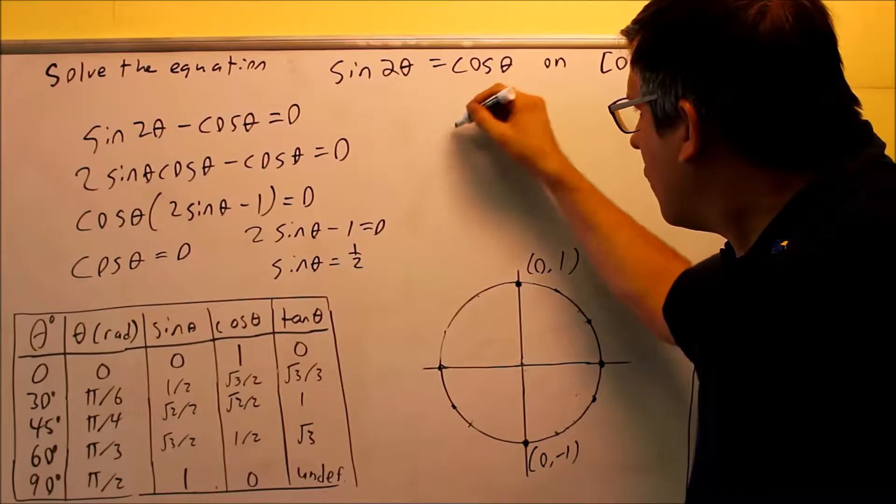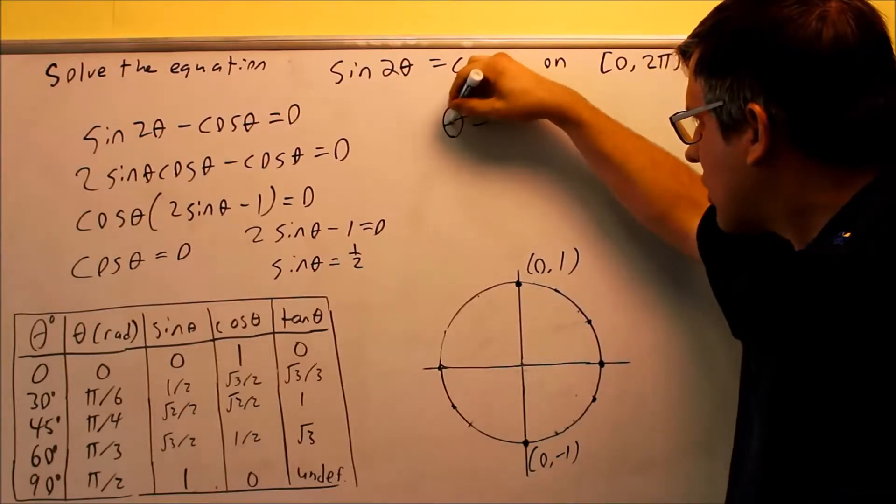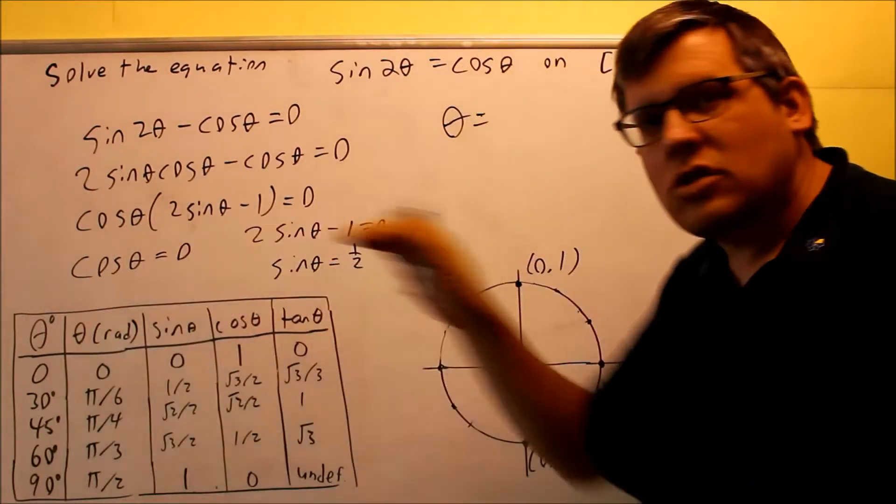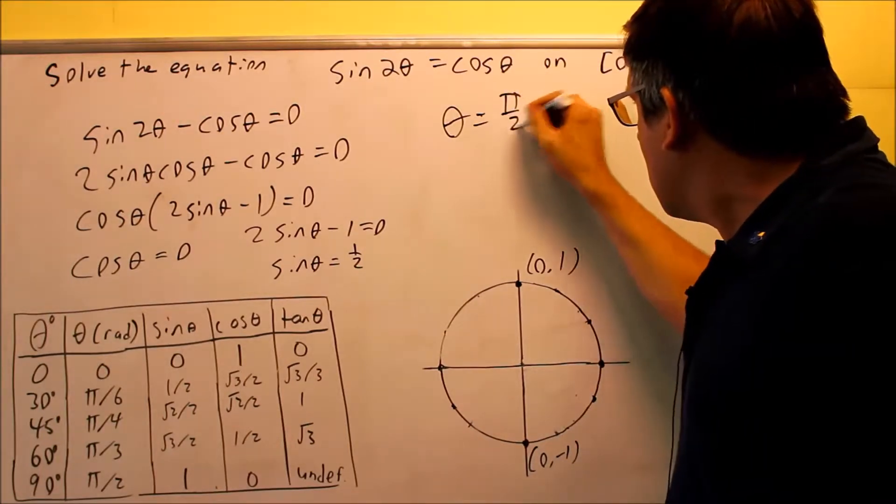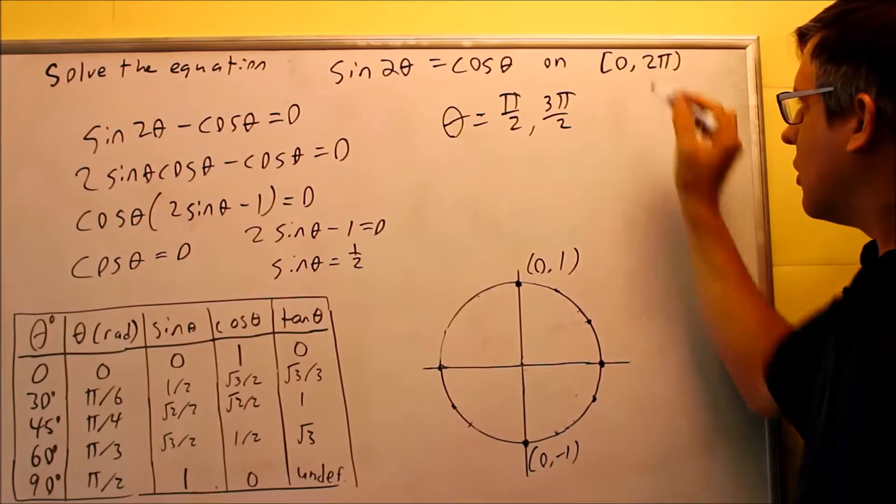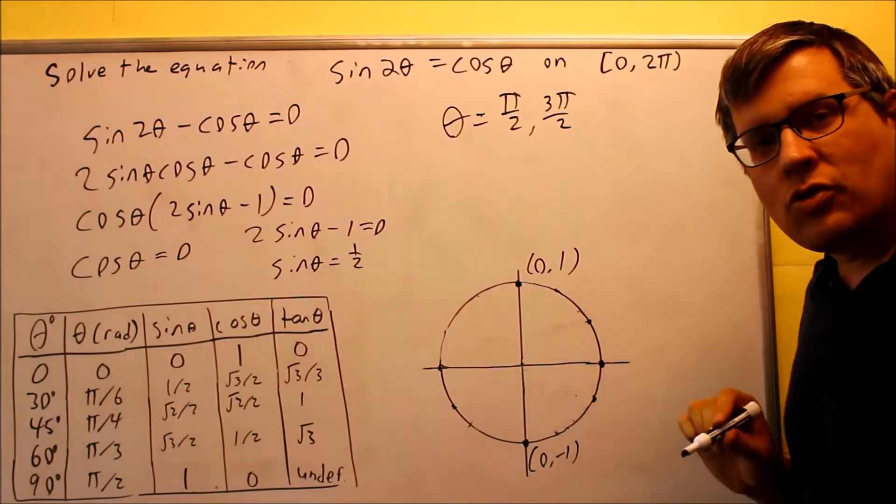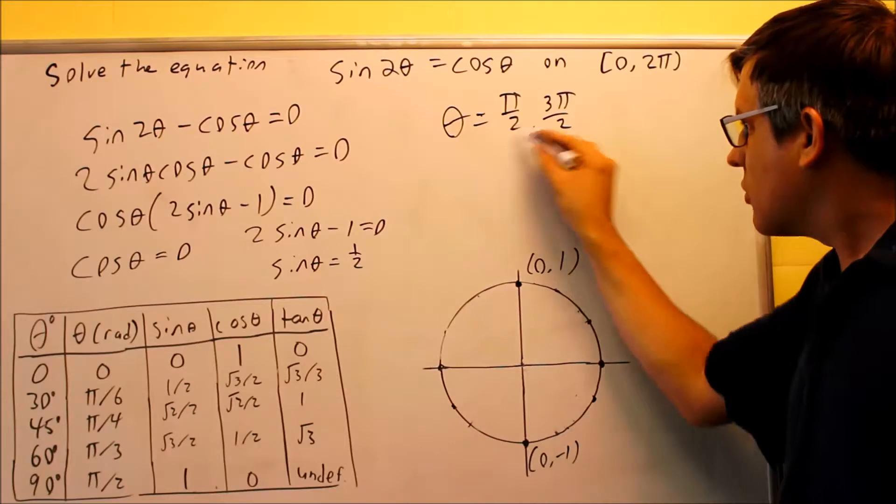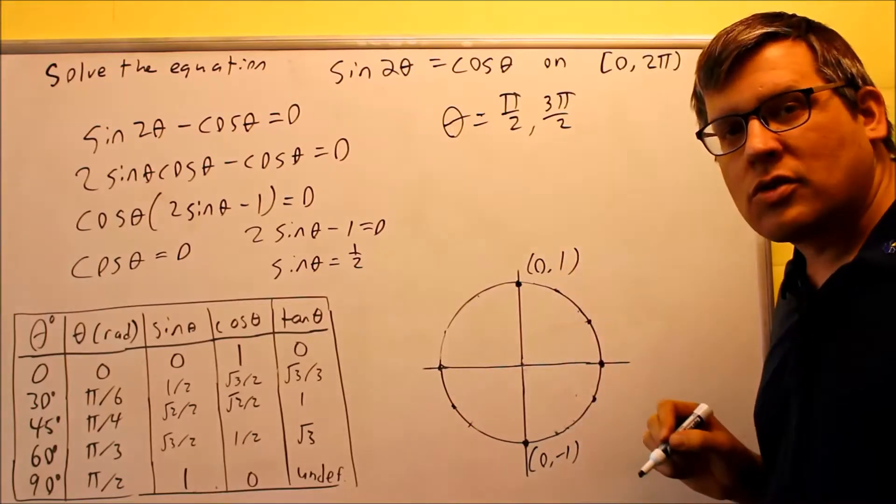So therefore, for my answer, the first two answers I'm going to have will come from this equation here. And that's going to be pi over 2 and 3 pi over 2. We're working with radians because it tells us our interval is from 0 to 2 pi, which means our answers need to be in radians. So here's the first two I get from the unit circle.